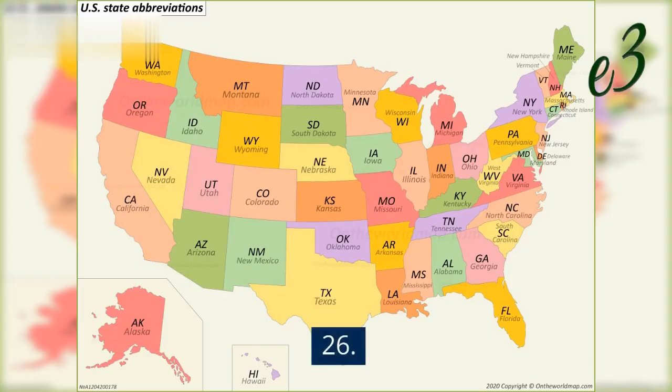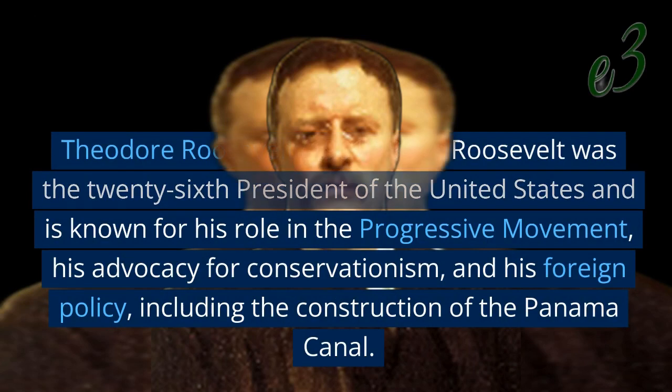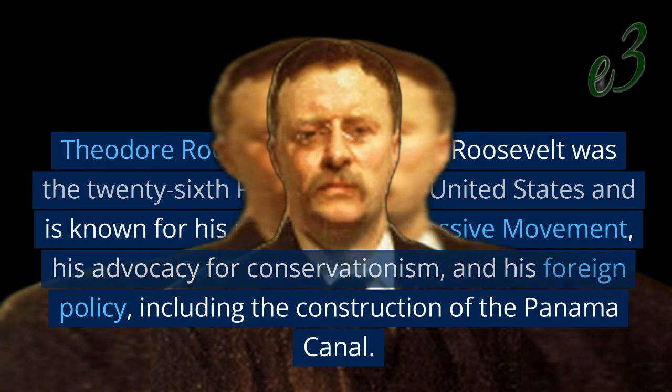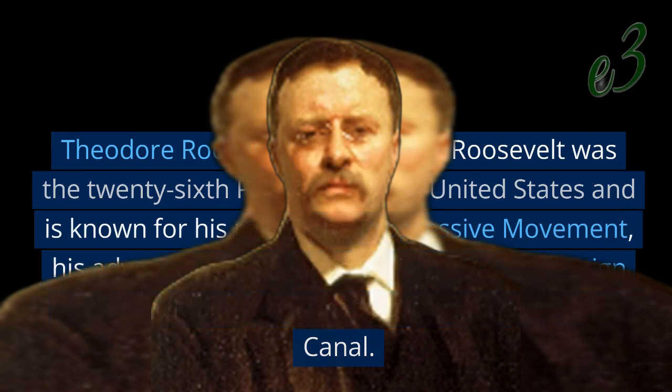26. Theodore Roosevelt, 1901–1909. Roosevelt was the 26th President of the United States and is known for his role in the progressive movement, his advocacy for conservationism, and his foreign policy, including the construction of the Panama Canal.